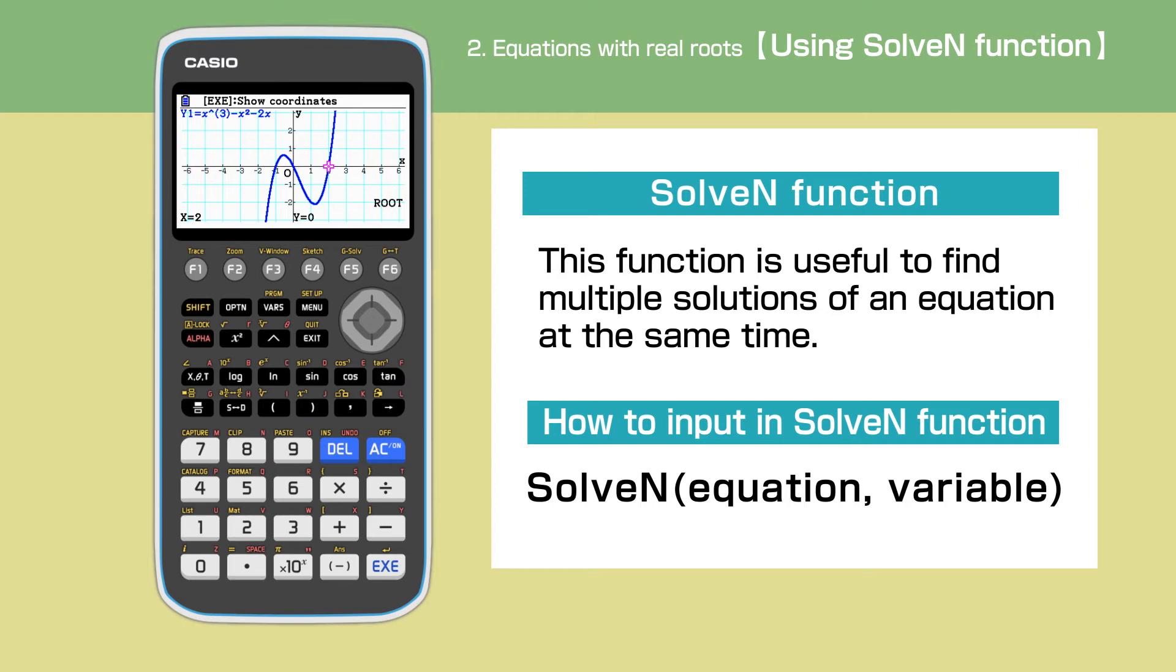Solver function we are able to find under the equation in the main menu is useful if an equation includes multiple variables and we substitute values in such variables to find out an unknown. The other solver function is called solve n. Solve n is suitable when we want to find multiple solutions of an equation at the same time. Our equation is x cubed minus x squared minus 2x. And because we want to find the roots, we should use solve n here.